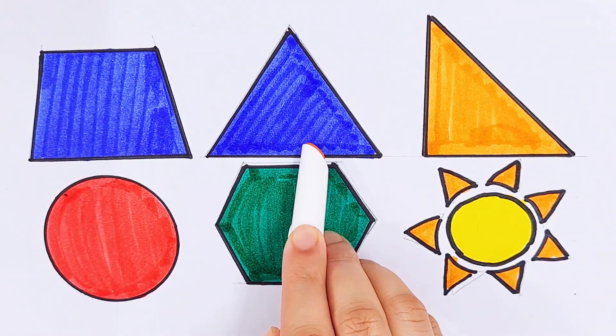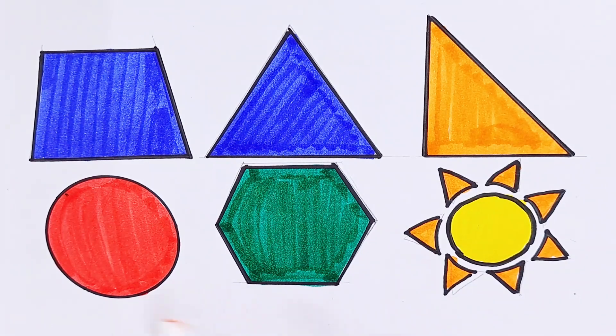Sun, trapezoid, triangle, right triangle, circle, hexagon, sun.